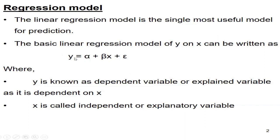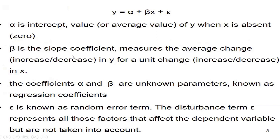So this is the basic knowledge for regression. The equation is: y = α + βx + ε. Here, y is the dependent variable, which is dependent on x, and x is the independent or explanatory variable. Alpha (α) is the intercept — that is, the average value of y when x is zero, meaning there is no effect of x. A practical example will make this clearer.